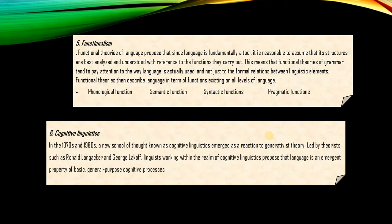For example, it studies the relationship between the pronoun and the noun, the verb with the object — the function of the pronoun as subject or object, the functions of the verb, and the functions of nouns as transitive or intransitive objects. Functional theories describe language in terms of its functions existing on all levels such as phonological, semantic, syntactic, and pragmatic.